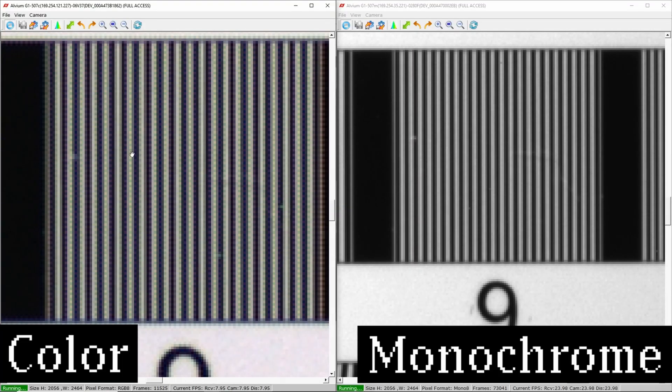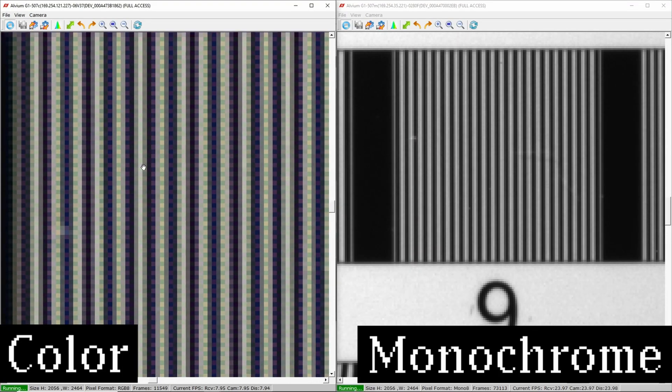Next, let's look at our color camera. We see the same lines as the monochrome, but they appear in more of a checkerboard pattern. And we can see those pesky jumping pixels again.